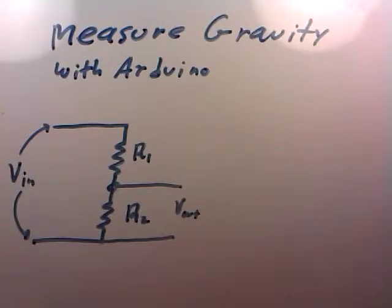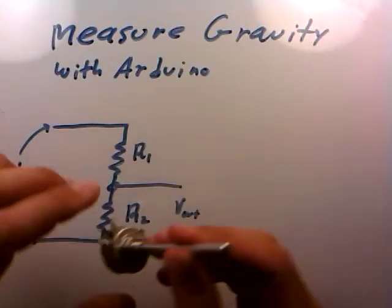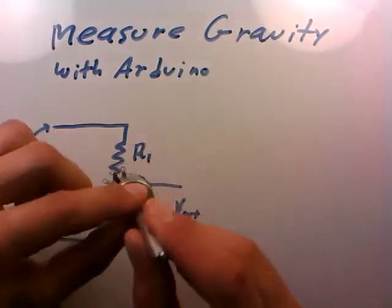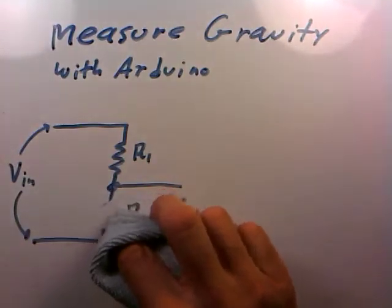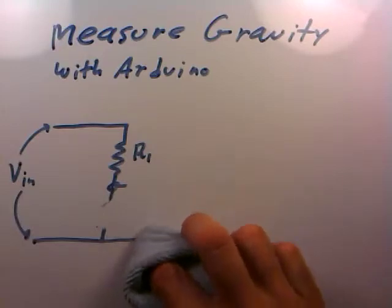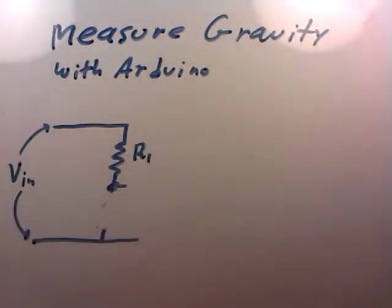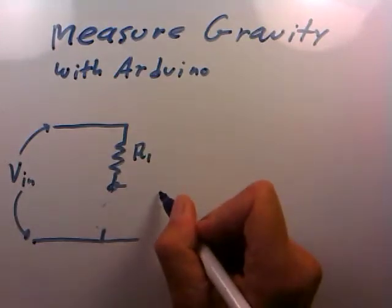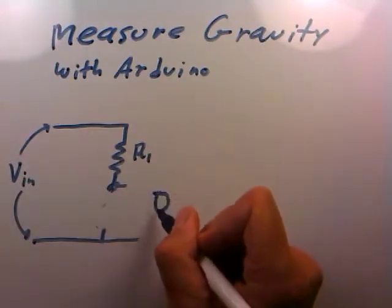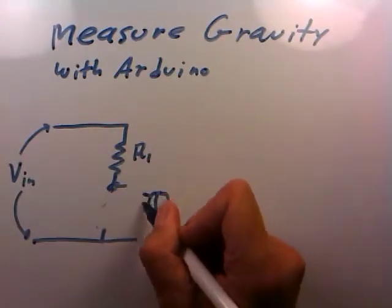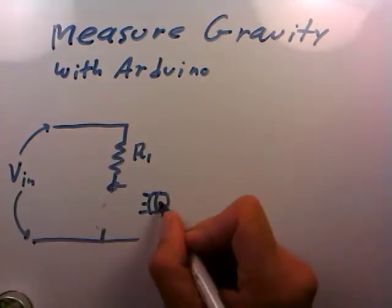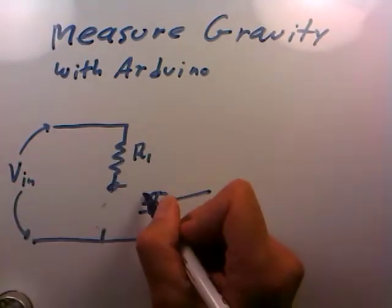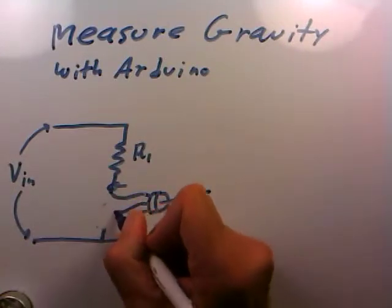So what we're going to do in this video to measure gravity is we're going to replace R2 with a potentiometer. So our circuit is going to look something like this. The second resistor down here isn't going to be a fixed resistor. It's going to be a potentiometer. There's the three leads on the potentiometer like that. Here's that long axis coming out like this. We're going to connect it something like this and like that.